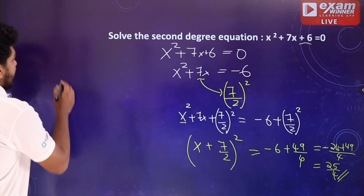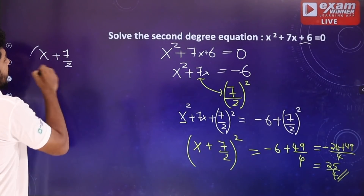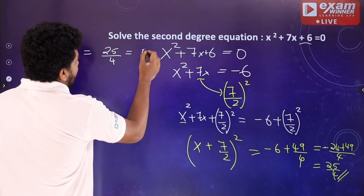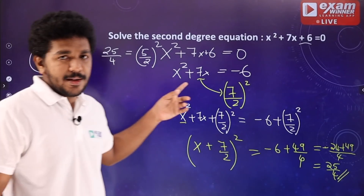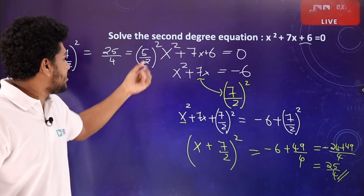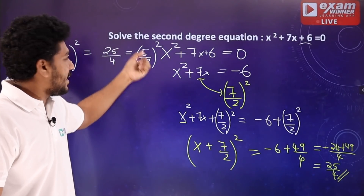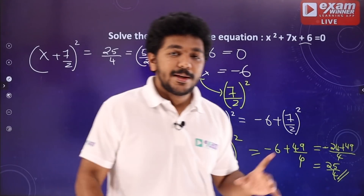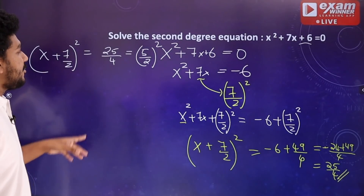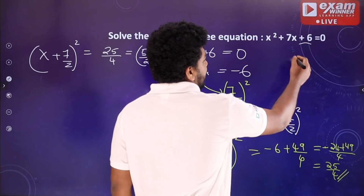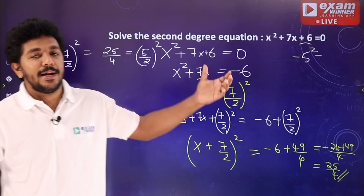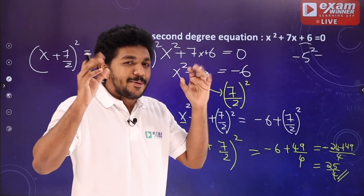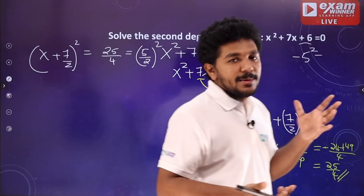Then, the left hand side: x plus 7 by 2, whole square, is equal to 25 by 4. Now, 25 by 4 is equal to 5 by 2 whole square, because 25 means 5 squared and 4 means 2 squared. So x plus 7 by 2 whole square equals 5 by 2 whole square. In this second degree equation chapter, there is always a square — for example, 16 is 4 squared and minus 4 squared is also 16; 25 is 5 squared and minus 5 squared is also 25.